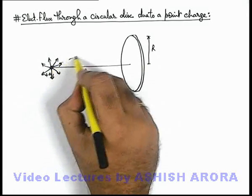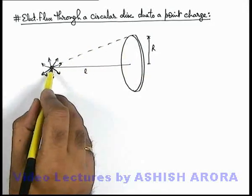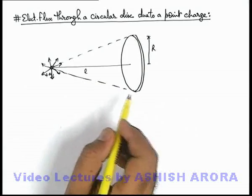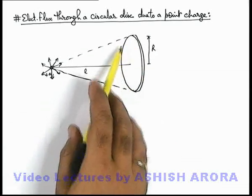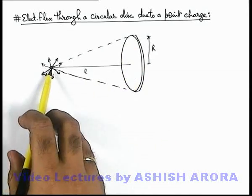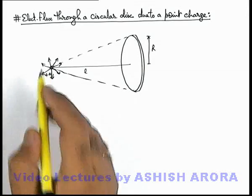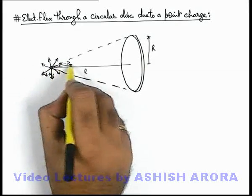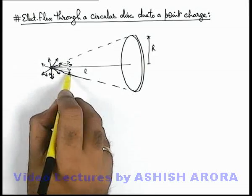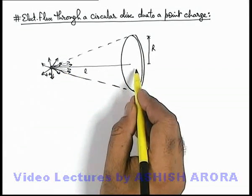If we consider a conical region of which the base coincides with the disc and vertex with the location of point charge, then whichever electric flux lines will be originated from the charge within this region will pass through the disc.